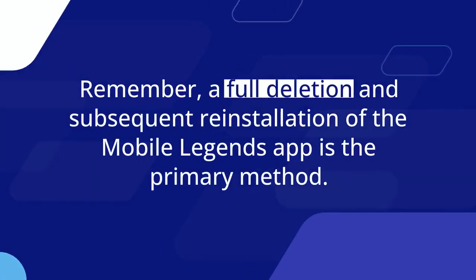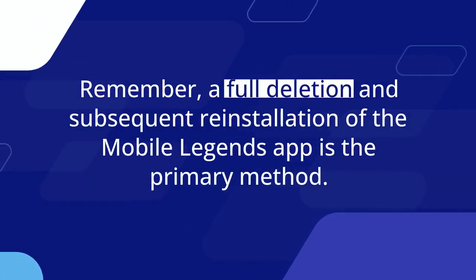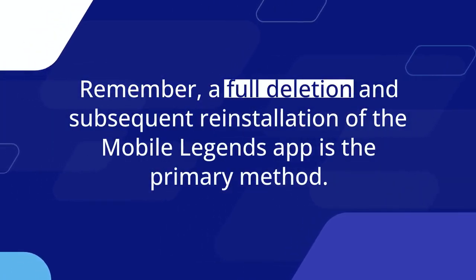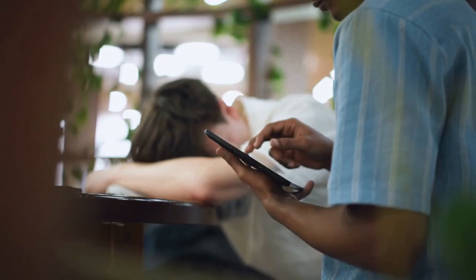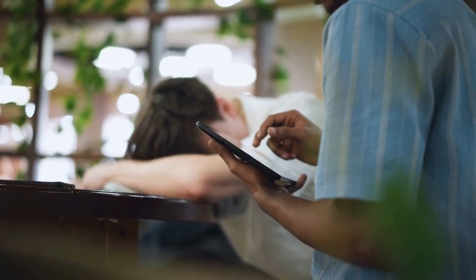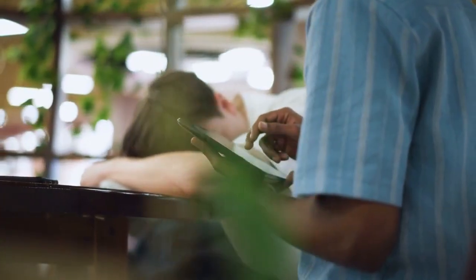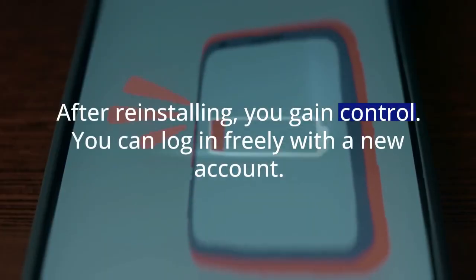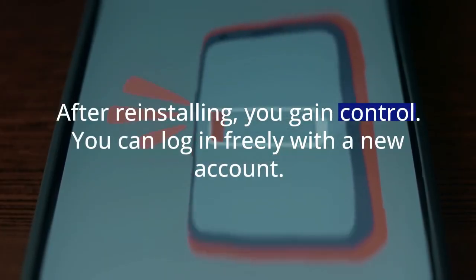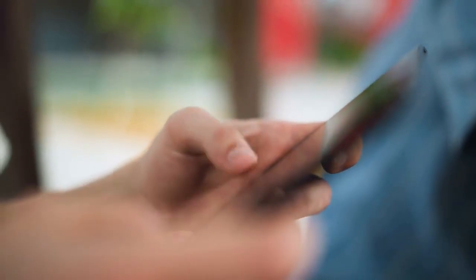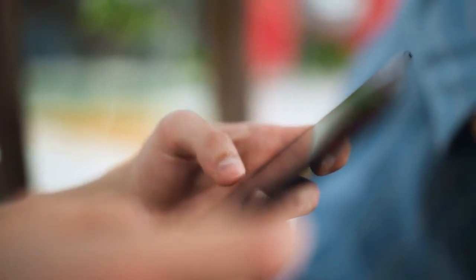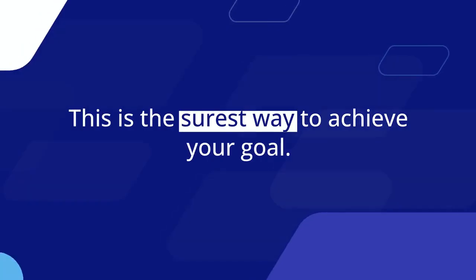Remember, a full deletion and subsequent reinstallation of the Mobile Legends app is the primary method. It is the most effective way to clear all local data, including the login information for your banned account. After reinstalling, you gain control and can log in freely with a new account, free from the banned account's persistent login loop. This is the surest way to achieve your goal.